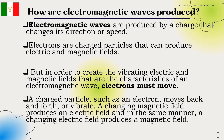A charged particle, such as an electron, moves back and forth or vibrates. A changing magnetic field produces an electric field, and in the same manner, a changing electric field produces a magnetic field.